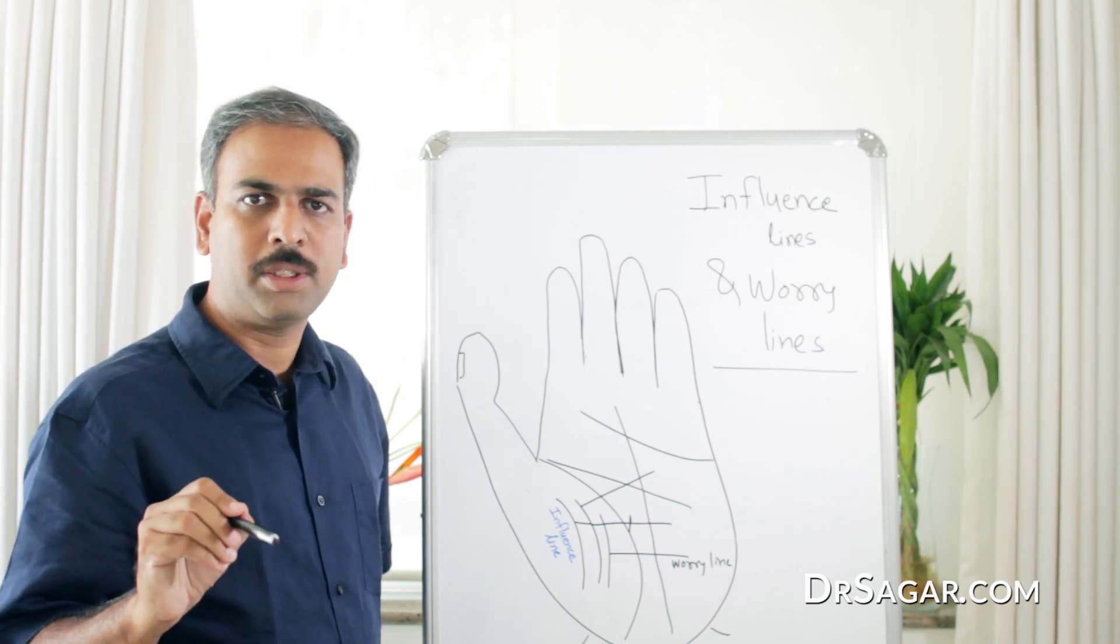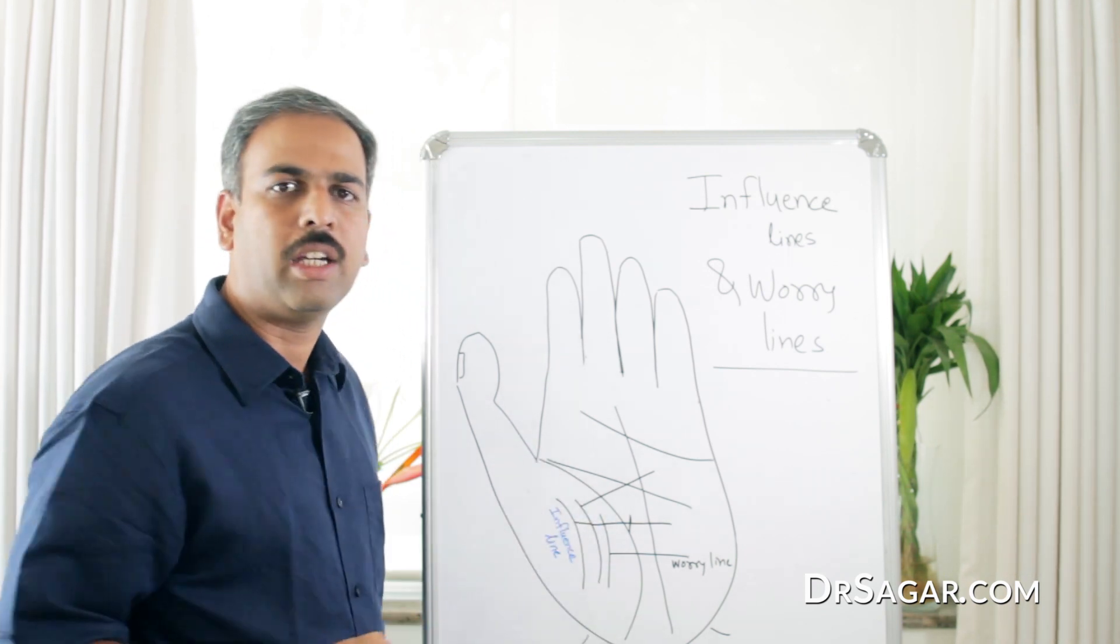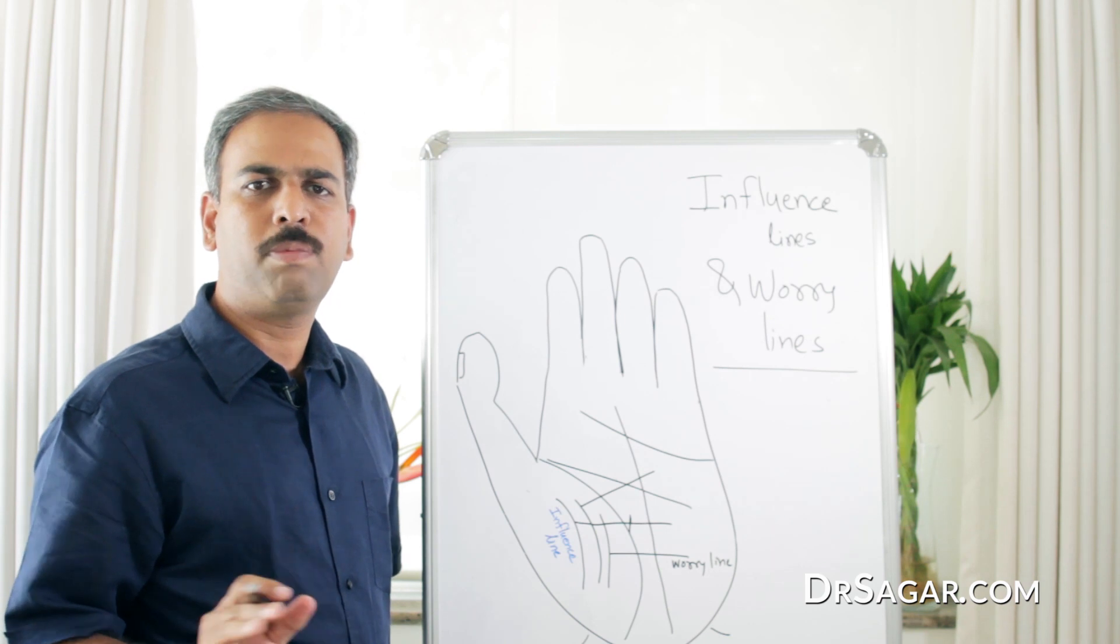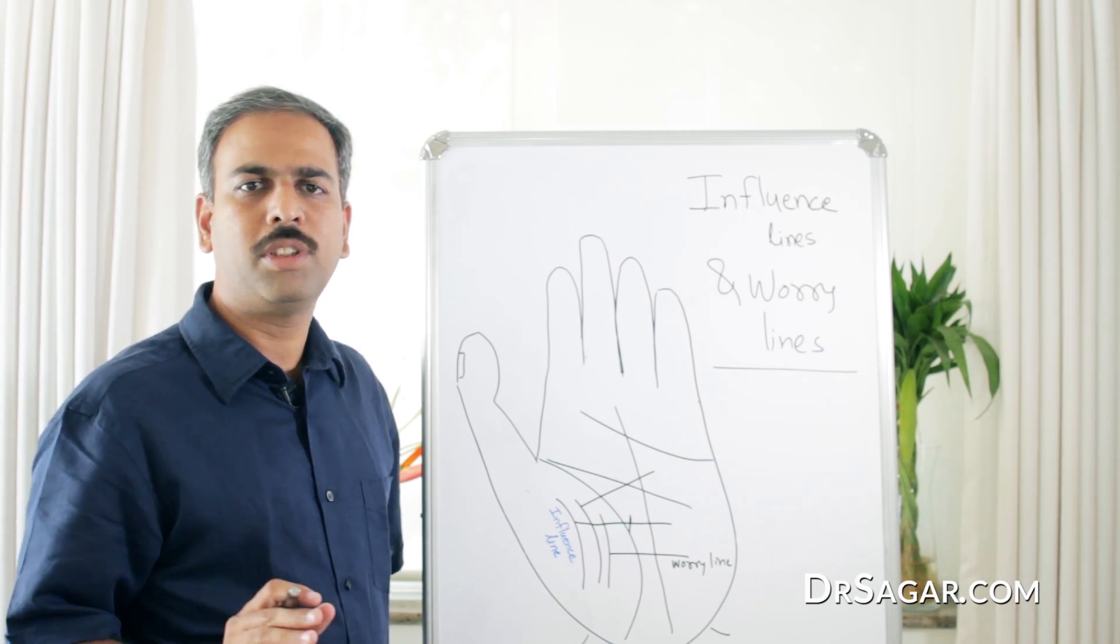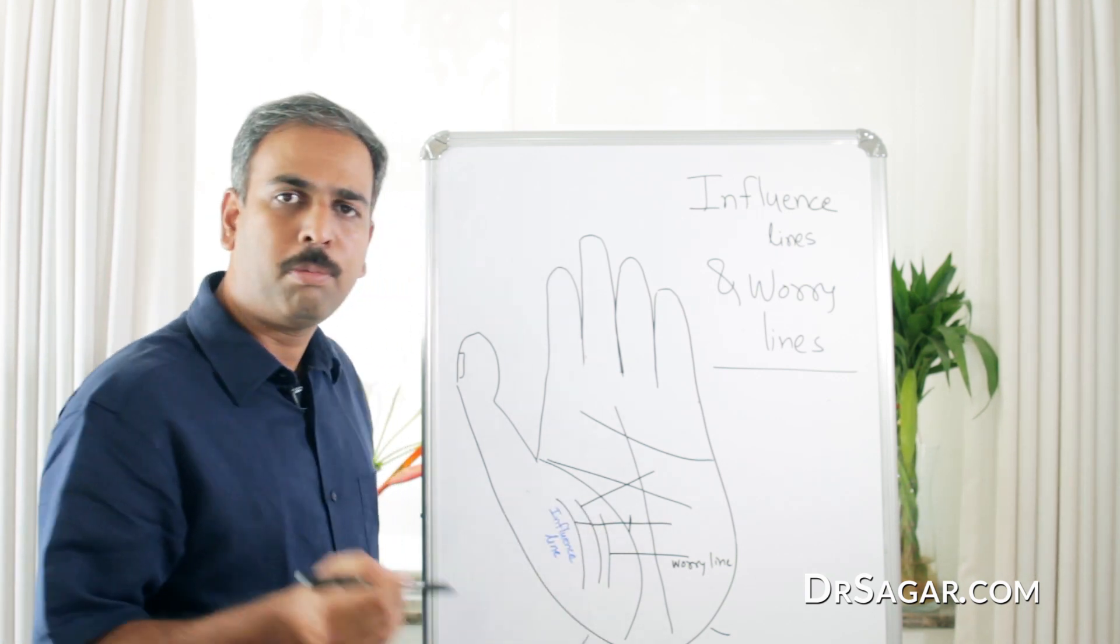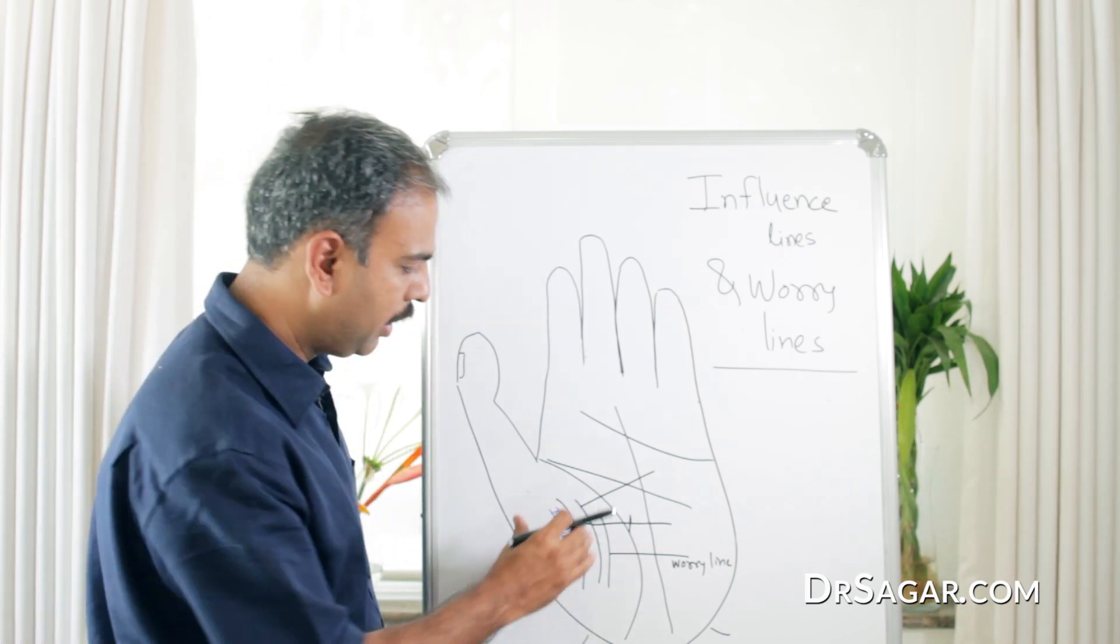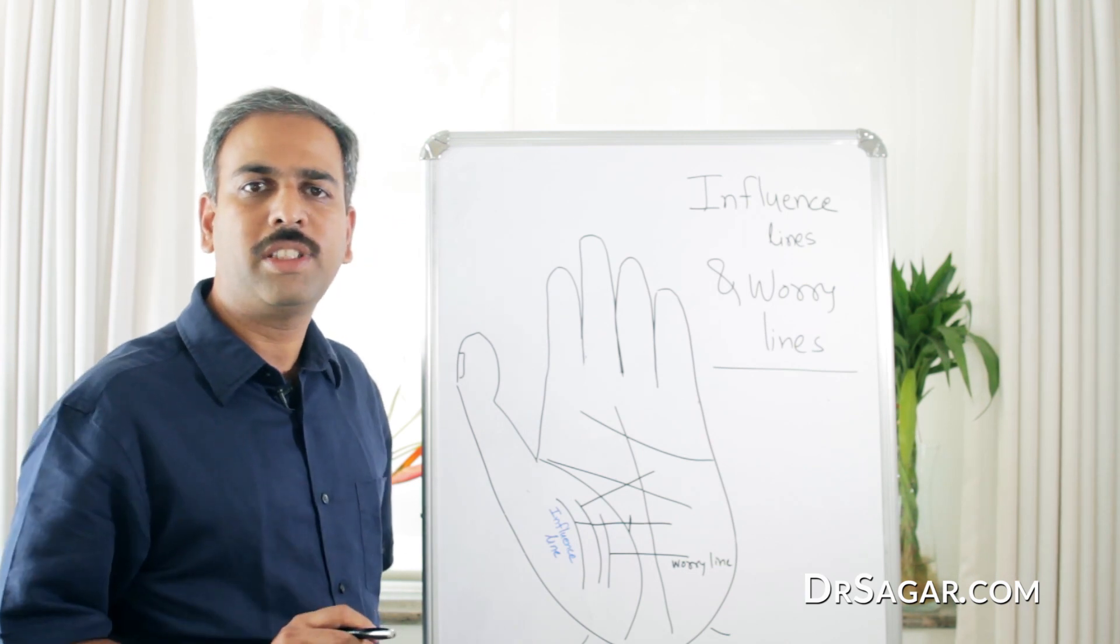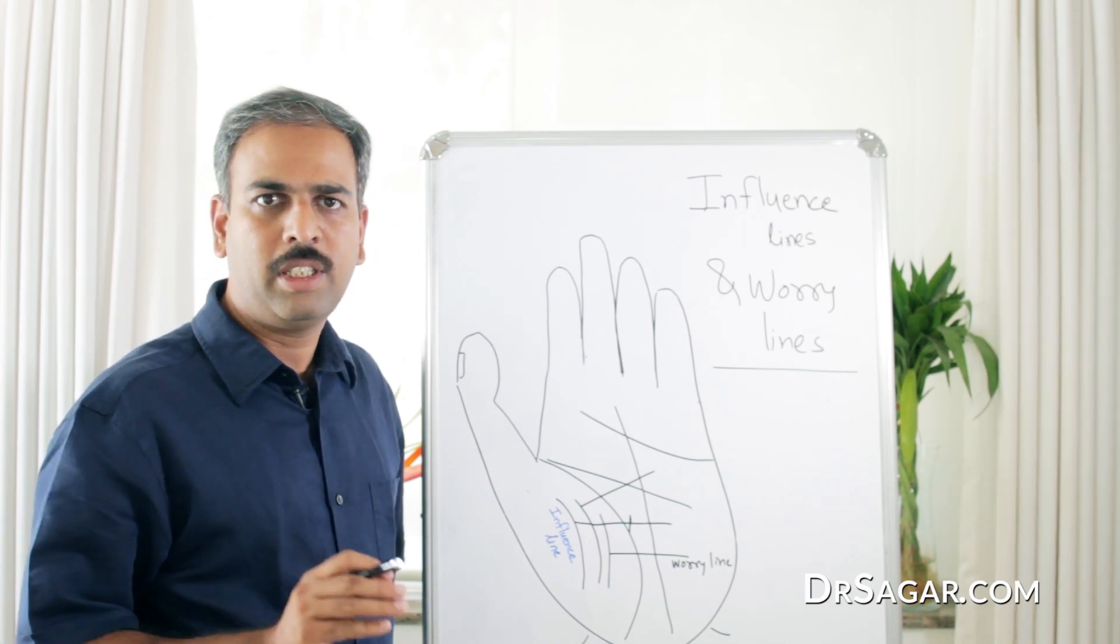Now, if no influence line is present in this area, the person is not influenced by any relationship or friendship. But if there are a number of lines present in this area, he is influenced by a number of persons in his life.